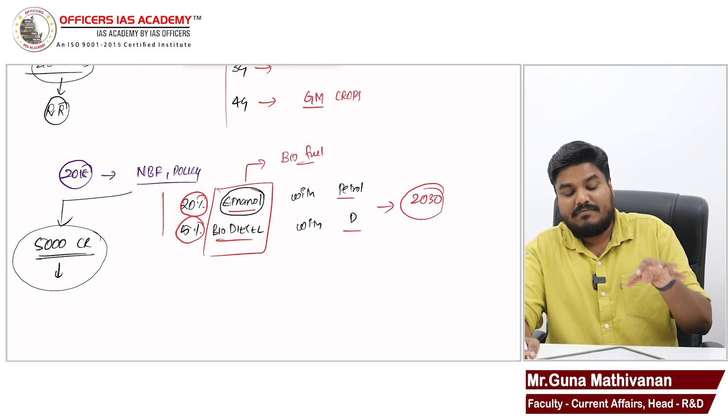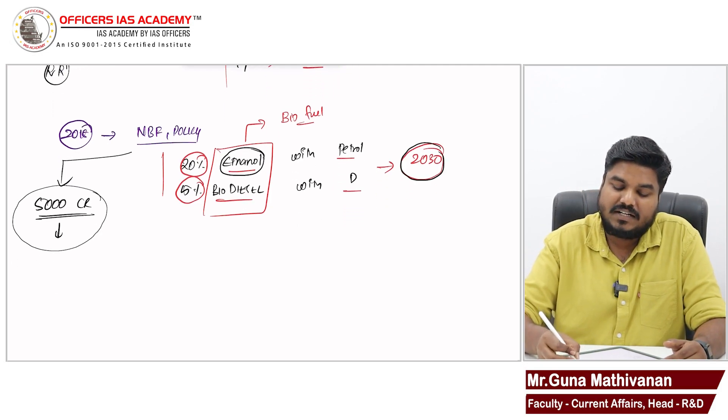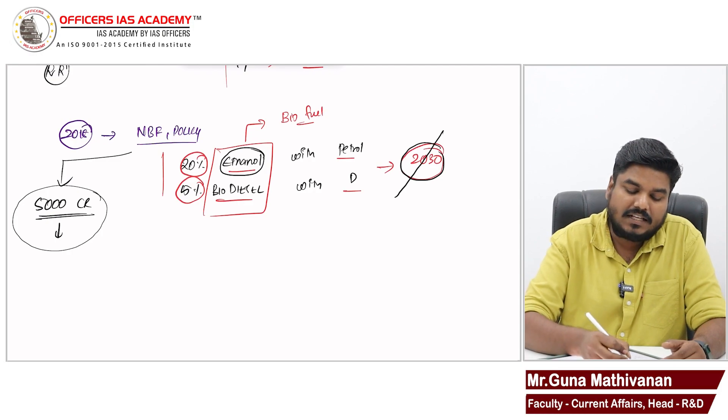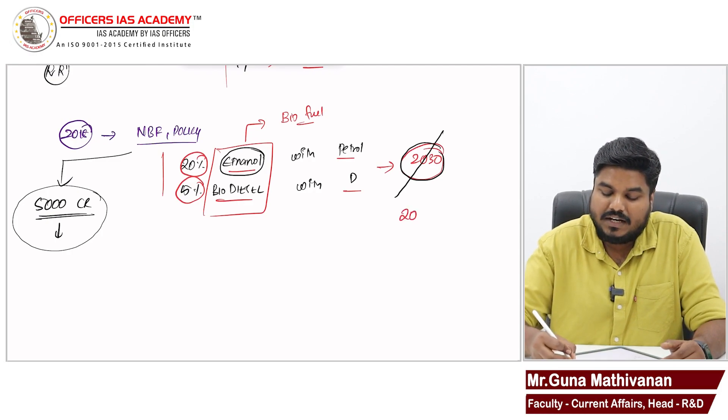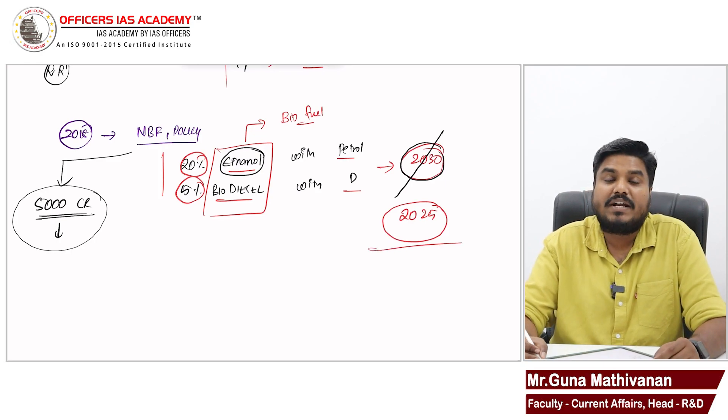So, recently, this biofuel policy was amended. This target of 2030 has been preponed to 2025. Government wanted to achieve this blending target by 2025.